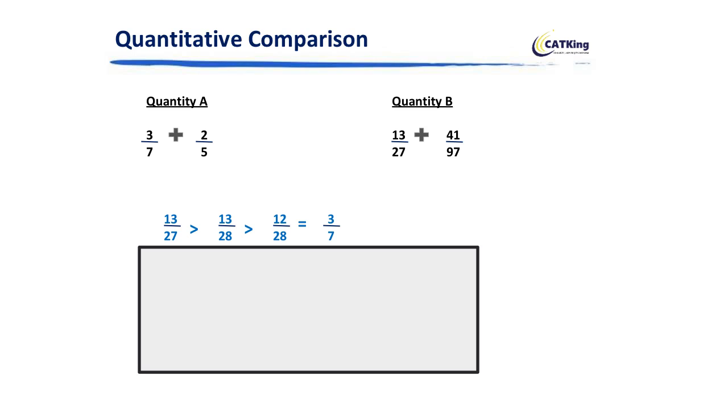Now 12/28 can be solved as, it is nothing but 3/7. You remove the common element 4. So that means my quantity B's first element is greater than the first element of quantity A.